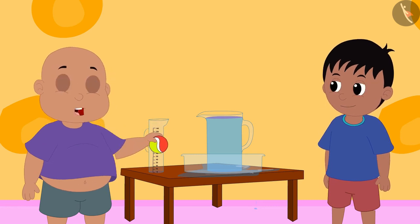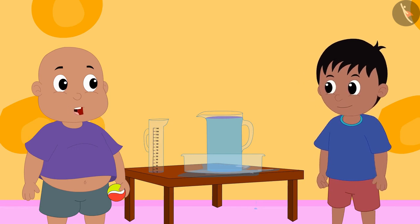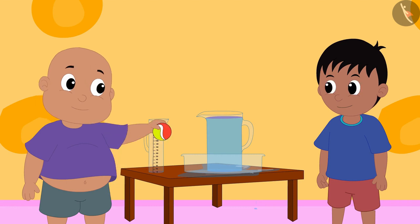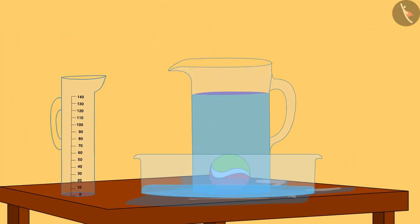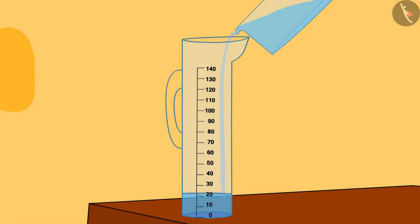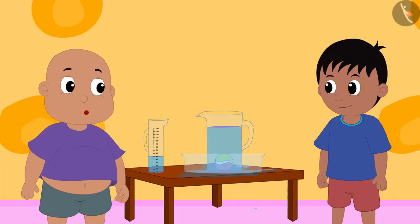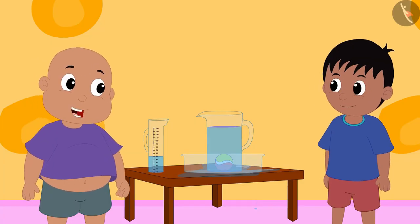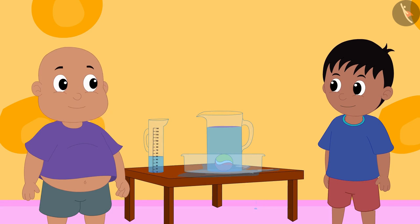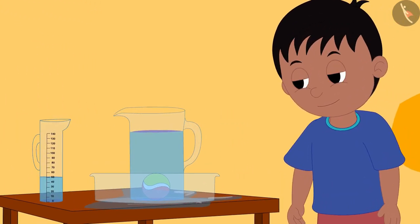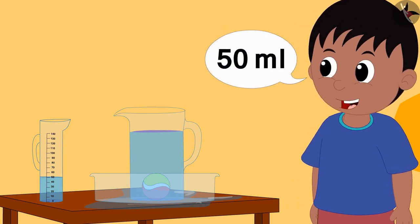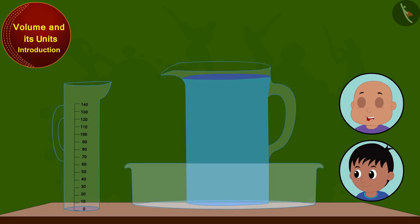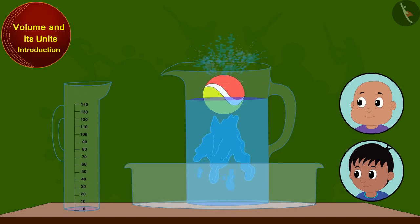Bablu said, now I will put this ball into the jug again, and this time when the water spills out I will collect it in this measuring cup. Bablu put the ball into the jug, water spilled out, and he collected it in the measuring cup. Bablu asked Raju how much water was in the measuring cup. Looking at the surface of the water, Raju said 50 milliliters.